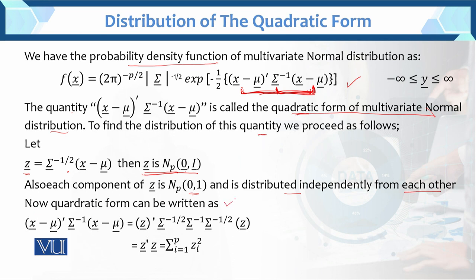Now, the quadratic form can be written as (x − μ)' Σ⁻¹ (x − μ). From our substitution, x − μ = Σ^(1/2) z, so x − μ prime equals z' Σ^(-1/2). Then with Σ⁻¹ in the middle and the remaining (x − μ) = Σ^(-1/2) z.